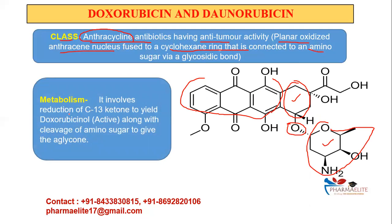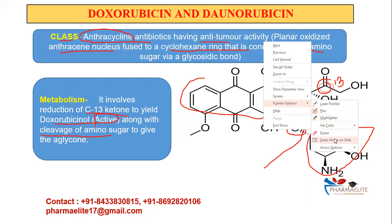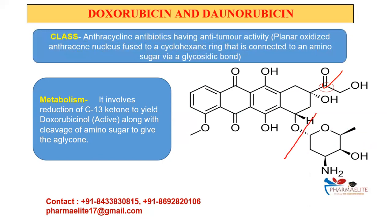Coming to the metabolism part: it involves the reduction of the C13 ketone to yield doxorubicinol, which is the active compound. So if asked, the active metabolite of doxorubicin is doxorubicinol. The metabolism involves conversion of the C13 ketone to an alcohol, along with cleavage of the amino sugar to give the aglycone. Remember two things for conversion to the active metabolite: the C13 ketone-to-alcohol conversion, and the breaking of the amino sugar.